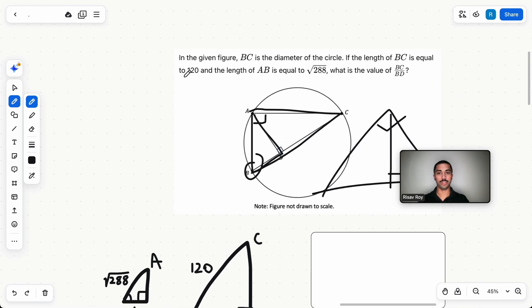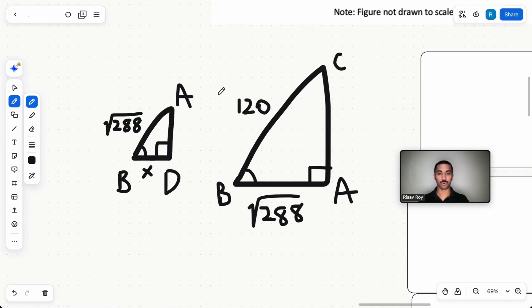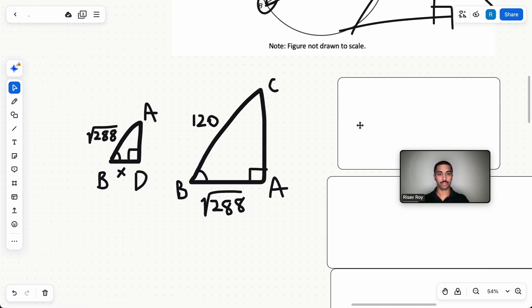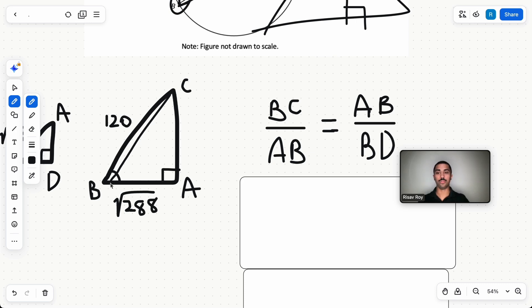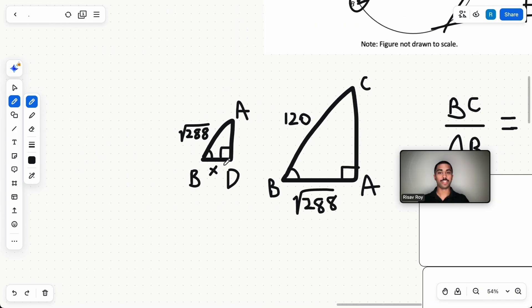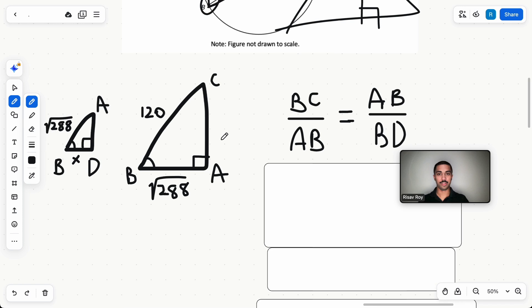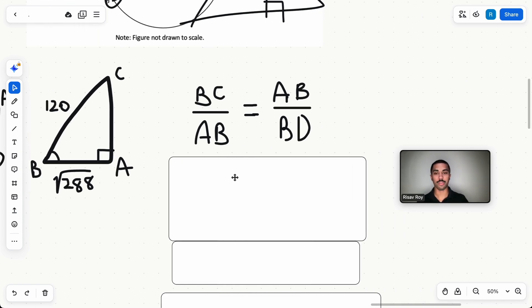And that means that this third angle is also the same. Angle A has the same angle measure as angle C. If we label all of the different numbers that we are given, we're going to get these two triangles. And all I want you to do here is just set up a proportion. The proportion of the hypotenuse divided by the side opposite to angle C, whatever angle measure this is, is going to be 120 over √288, right? So that's BC over AB, which is going to be the same proportion of this hypotenuse divided by X, because these two are similar triangles, right? So BC over AB is equal to AB over BD.